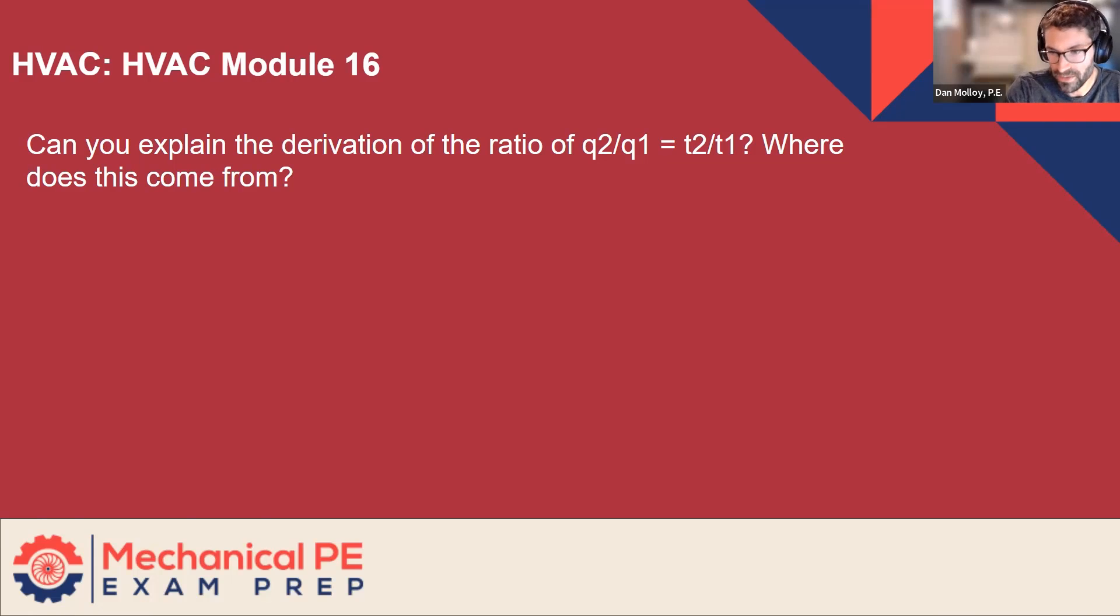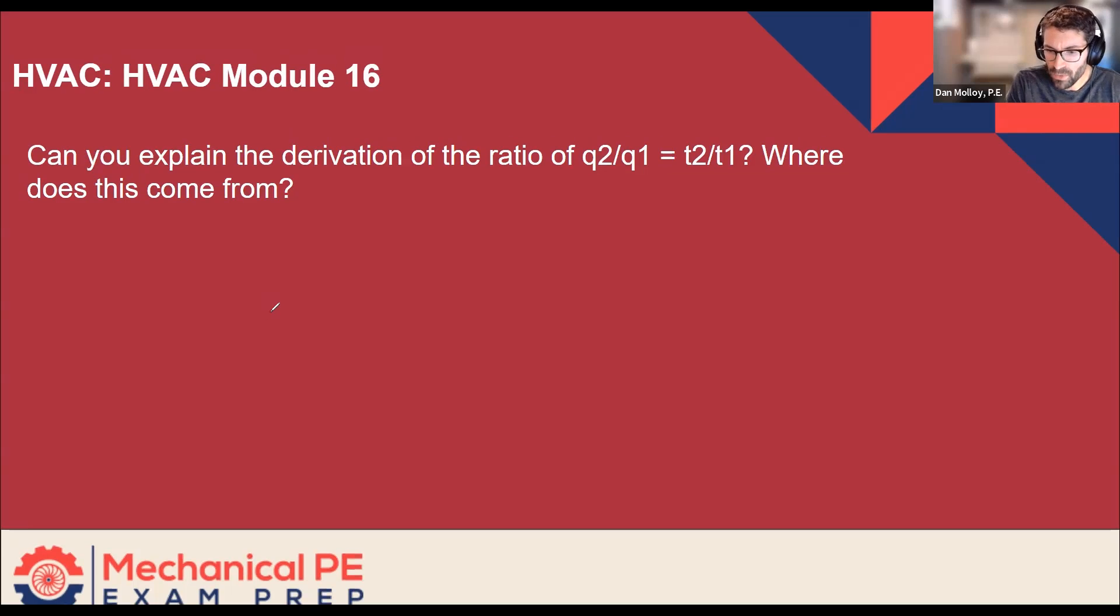So just for context, for kind of a reminder, this problem was about a fan that was used at standard temperature and pressure, and then is being utilized at a higher temperature. So the problem starts by asking you to figure out the air horsepower based on the efficiency and the brake horsepower, both of which are given. So through that, we get the air horsepower.